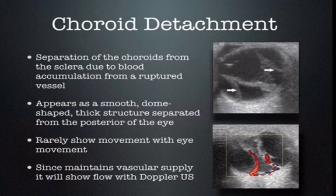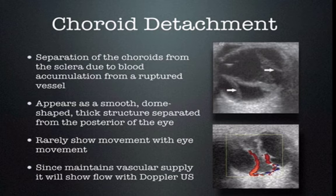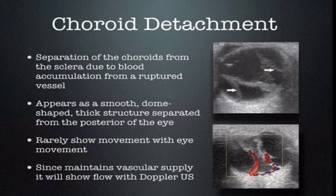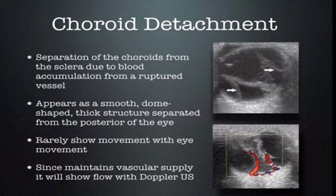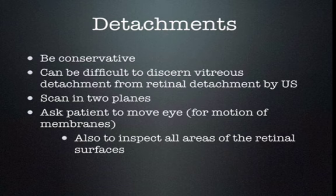Choroidal detachments are the deeper layer of the eye and are not as thin or flexible as just the retina, because the retina lays over the top of the choroid membrane. When the choroid separates from the posterior parts of the eye, the retina is involved too, so it's usually thicker, easier to see, generally domed, and doesn't move with eye movements. However, an old retinal detachment may also dome and not be movable. Fortunately, the choroid has the blood supply to the retina — so if you turn on Doppler, you'll see blood supply in the choroid detachment. You do not see blood supply with a retinal detachment because the choroid is not detached. Use Doppler ultrasound to confirm a choroid detachment.